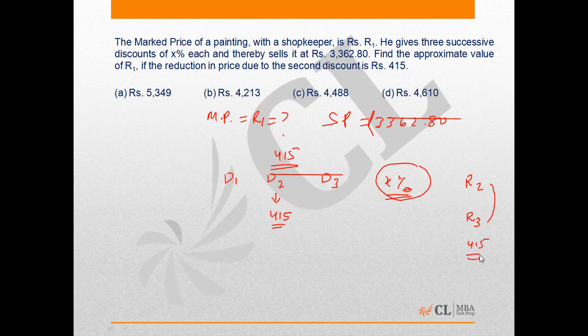So we should see what happens if three discounts of a fixed percentage point are offered on some price. Let the price be Rs 100 and discount percent be 10 percent. After the first discount, the price will be 90, which means the value of D1 will be 10.